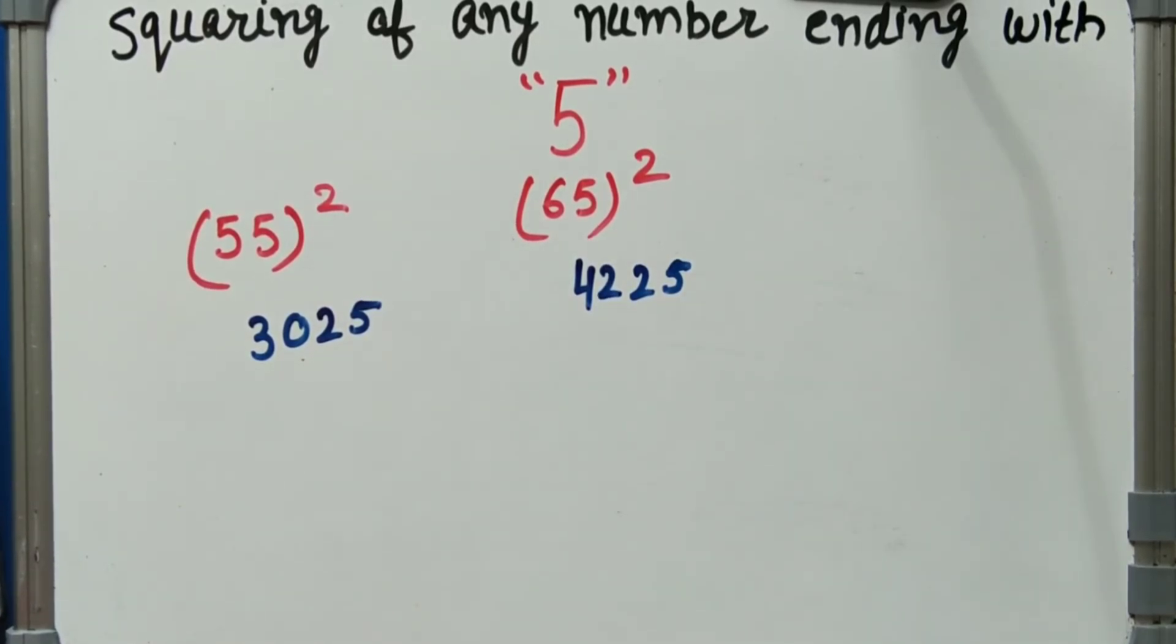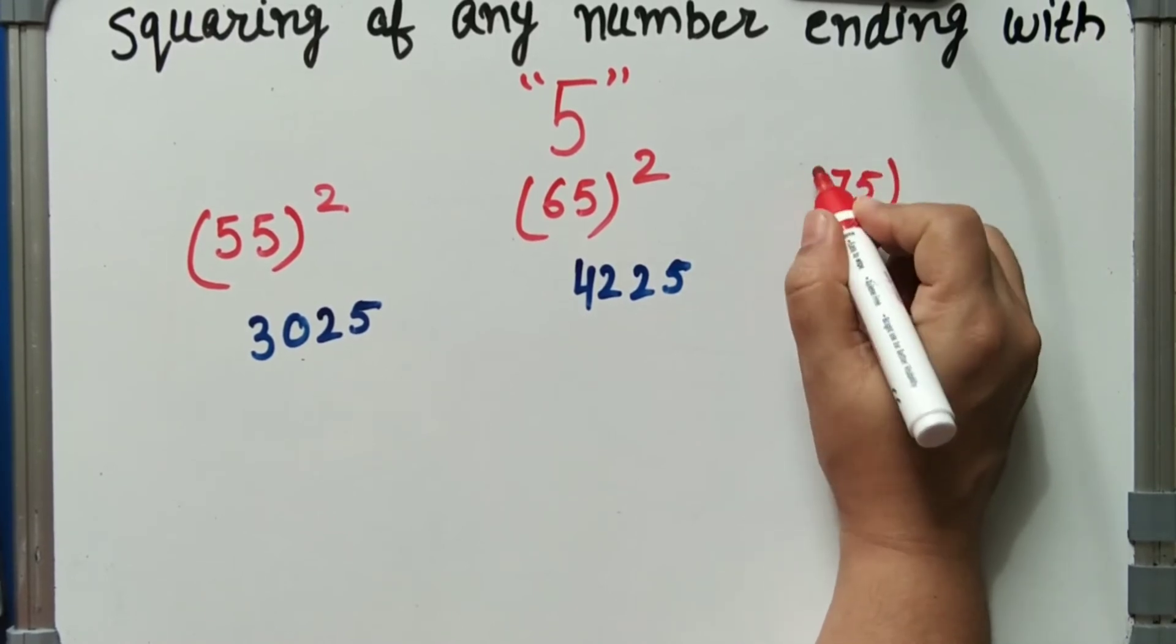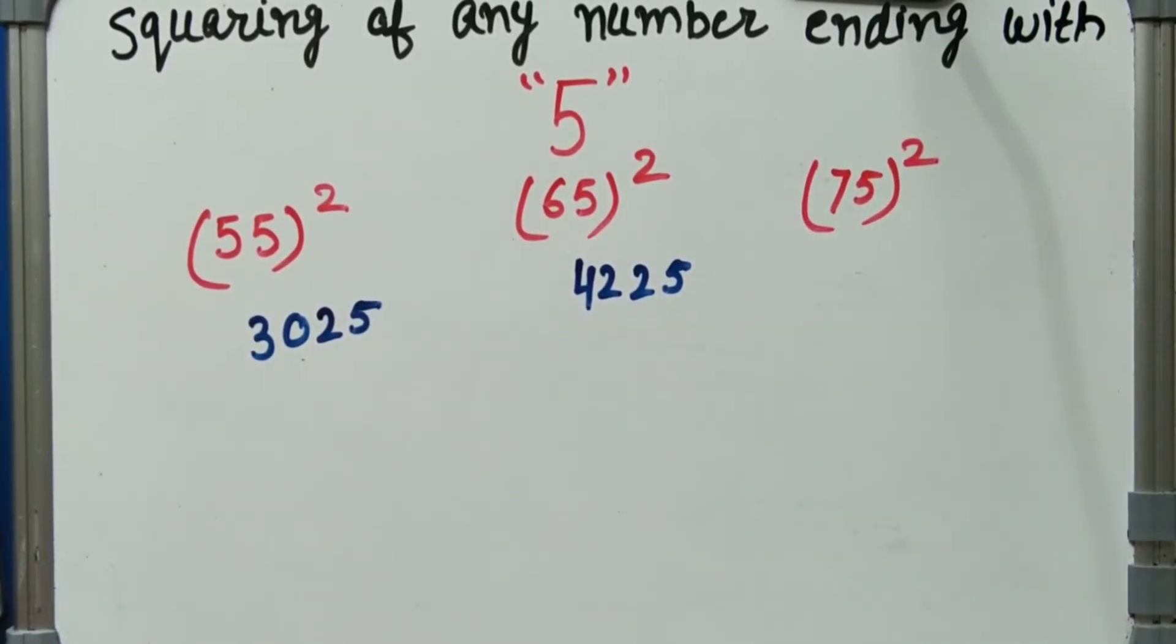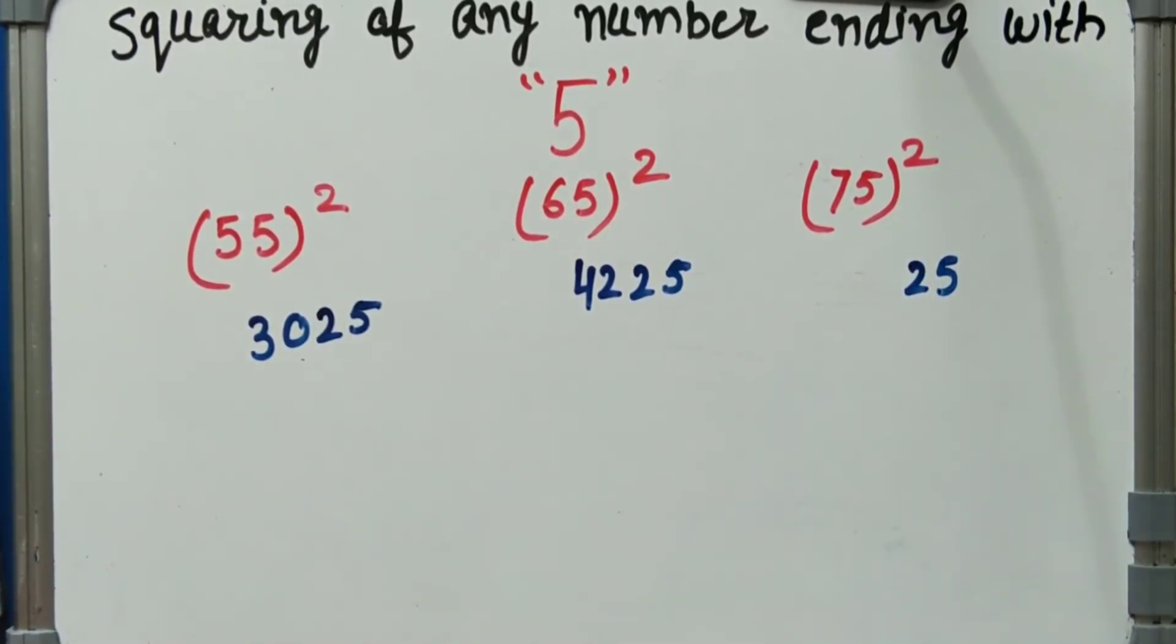75 square: 5 fives are 25, 7 into 8, 56, 25.